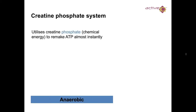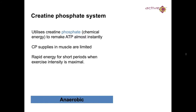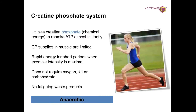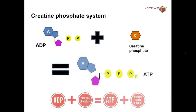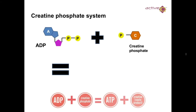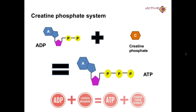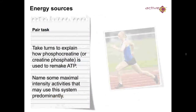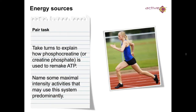So the creatine phosphate system — how does it work? It utilizes creatine phosphate, which is chemical energy, to remake ATP almost instantly. CP supply within the muscles is limited. It provides rapid energy for short periods when exercise intensities are maximal, does not require oxygen, fat, or carbohydrate — so we know that as anaerobic — and produces no fatigue waste products. You're looking at short events, no more than 10 seconds long. The equation: creatine phosphate plus ADP equals ATP plus creatine waste.